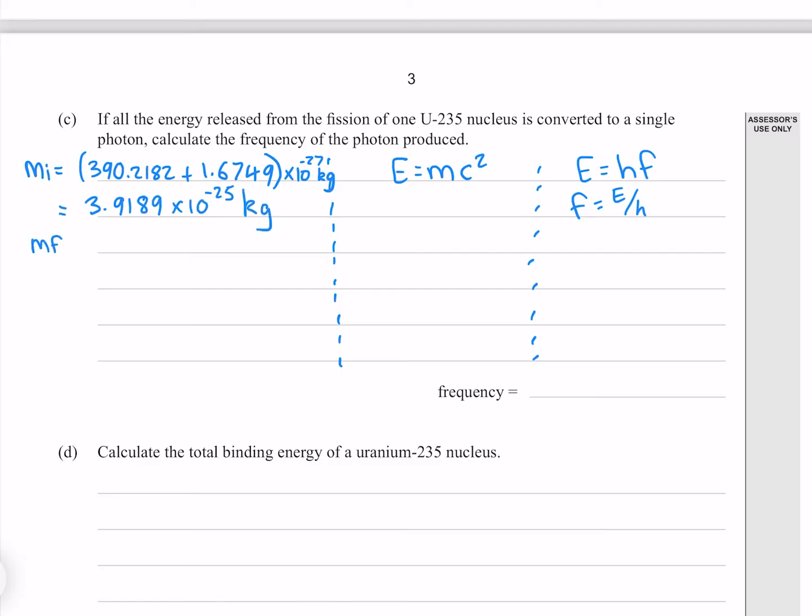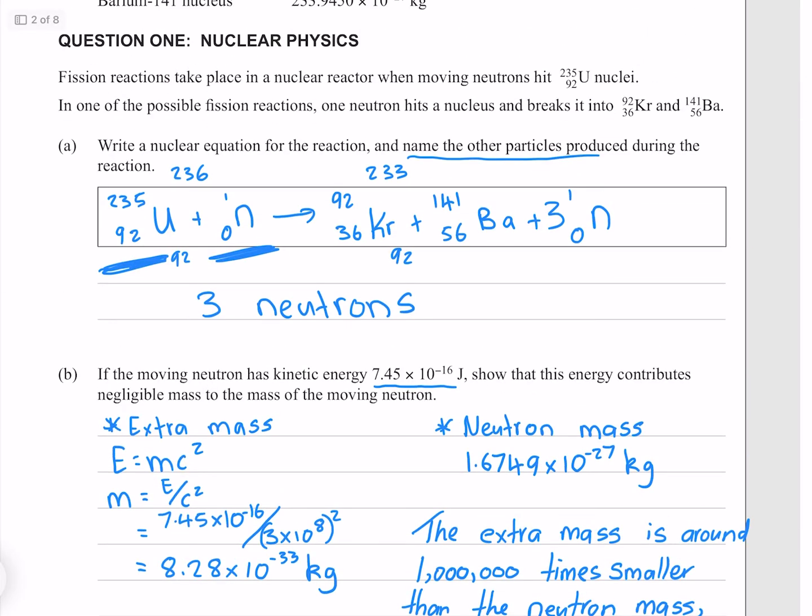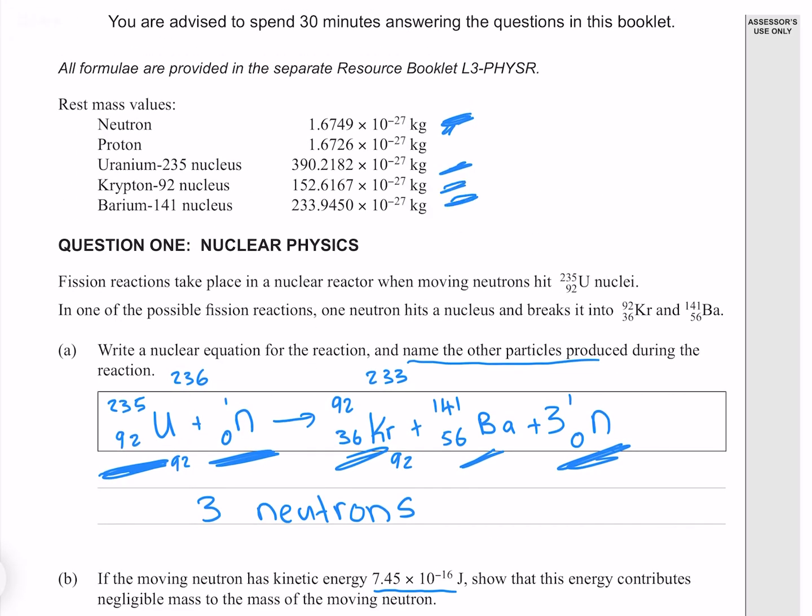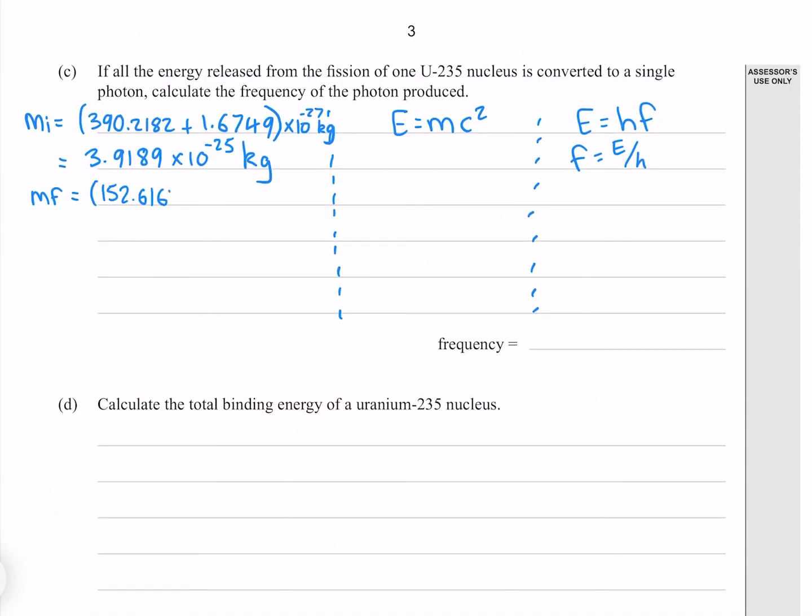Now for our final mass, that is going to be the mass of our krypton, the mass of our barium, and the mass of three neutrons. Once again, all of which we're given up here. Which gives me 3.9159 times 10 to the minus 25 kilograms.